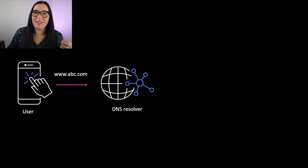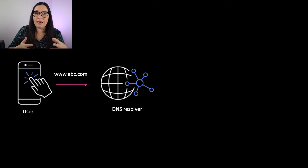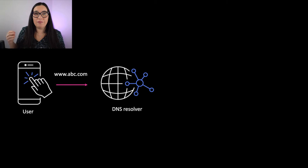The first step: the user types www.avc in the browser. The browser will send this request to the DNS resolver, sometimes called the recursive resolver. Your browser knows where it is because of your ISP — your internet service provider. Whatever your ISP is, they will have that configured, and your browser will know where to go.